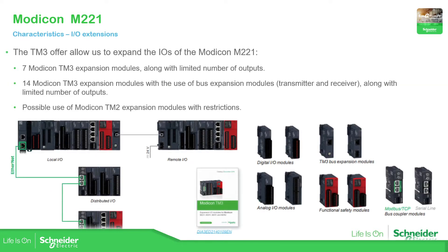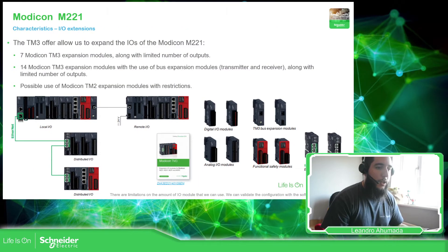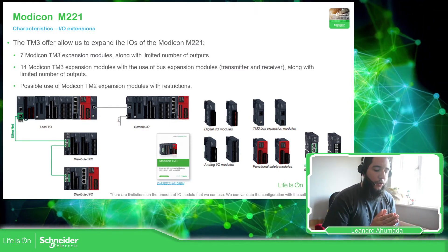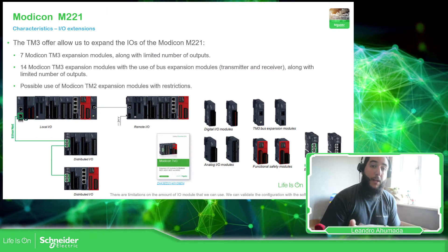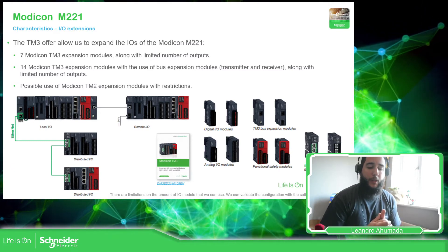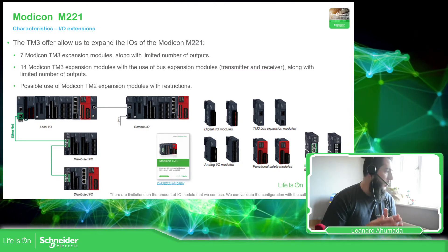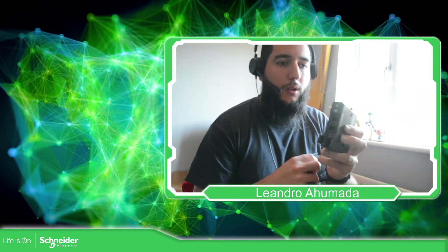If we don't have enough I/Os, we can use expansion modules. The expansion modules are the TM3 family, but we can also use a bus coupler to extend the I/Os of the PLC. Here we have the TM3 modules, and the bus coupler — in this case for Modbus serial communication — and we also have one for Ethernet communication, Modbus TCP.